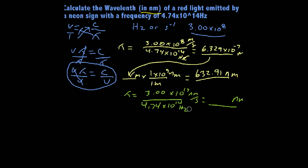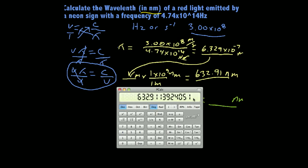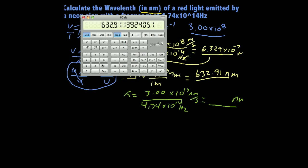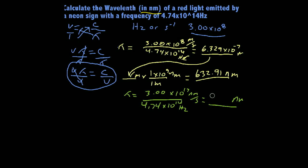Or you can just turn around and in the very beginning, plug in this 3 times 10 to the 17 divided by 4.74 times 10 to the 14. That's going to give you 632.91 nanometers. It's all personal preference. I prefer to keep my life simple. So if you see me do problems like this in the future, I'll do them this way.